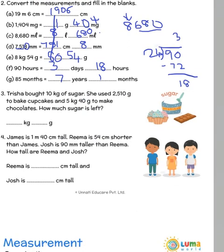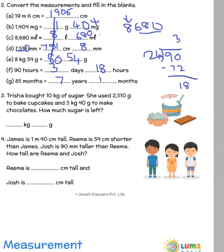Trisha bought 10 kg of sugar. She used 2510 grams to bake cupcakes and 5 kg 40 grams to make chocolates. So we need to find out how much sugar is left. Here we have 10 kg which is given. Remember this is given in grams and this is given directly in grams. So it is nothing but 2 kilograms. Remember 2000 grams would be 2 kilograms and 510 grams. And the other amount is 5 kg and we have 40 grams.